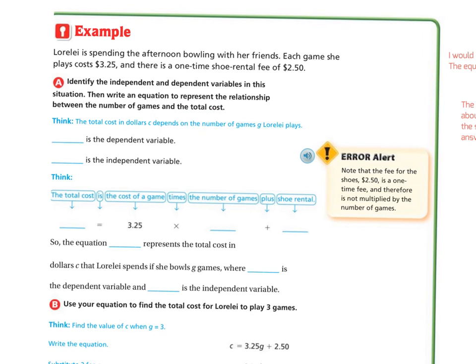The total cost in dollars, C, depends on the number of games, G, that Lorelai plays. So the dependent variable is going to be C, the cost, and the independent variable is going to be G, the games, because the more games she plays, the higher the cost.